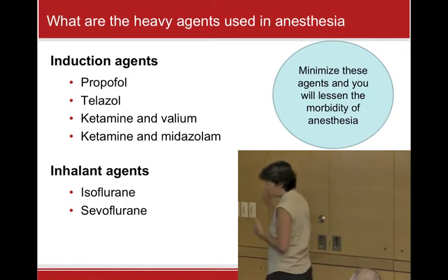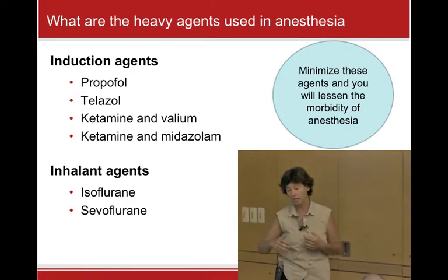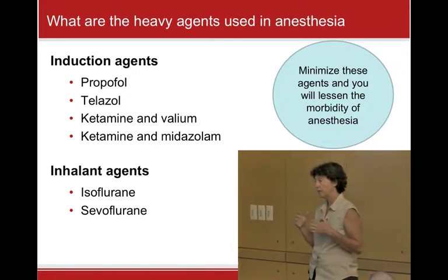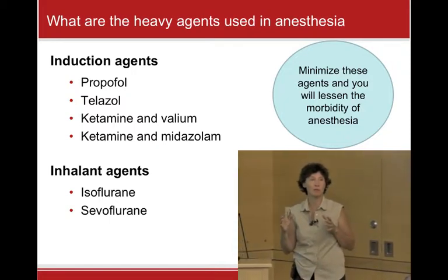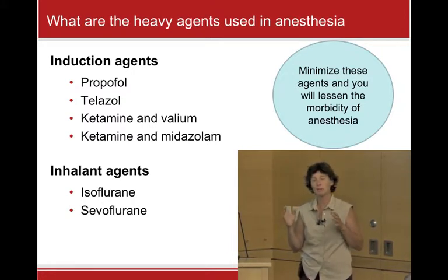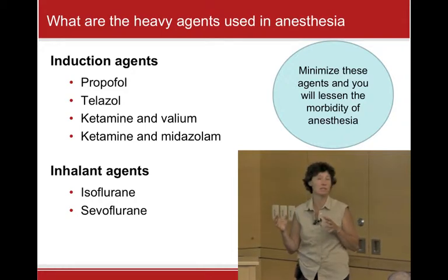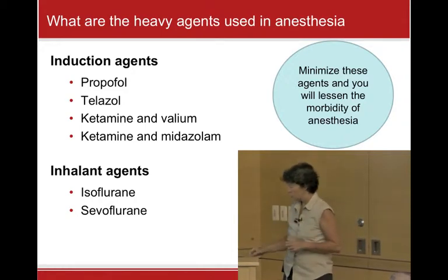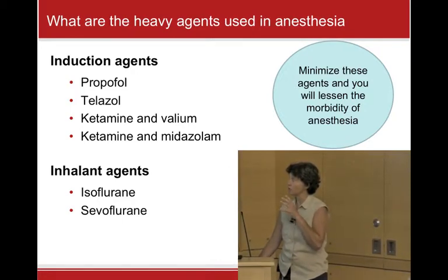In a shelter situation, the goal is to get the animal out and into the general population healthy. We don't want them returned, and we don't want people calling back saying the cat has chronic cystitis. Reducing these agents is going to lessen the morbidity of anesthesia.